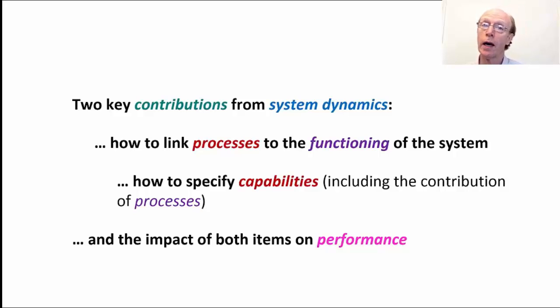The first is a way of linking processes to the actual functioning of the system. System dynamics is not just a descriptive diagrammatic qualitative explanation of how we think things work. It is actual working models, and on the basis of those processes we can also specify the capabilities, including the contributions of those processes, and estimate the impact of both those elements on the performance of the organization.